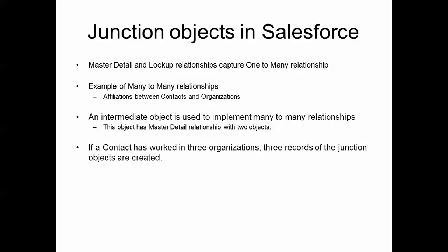However, in real life we have many cases where we need a many-to-many relationship. For example, a contact for our nonprofit may be volunteering at three organizations, and at another one she may be working as an employee. This many-to-many relationship between individuals and companies cannot be implemented through master-detail and lookup. This is called a many-to-many relationship between contact and organization objects.